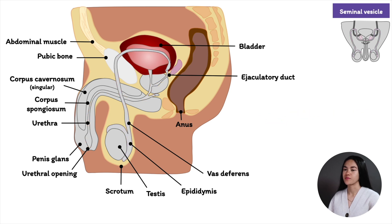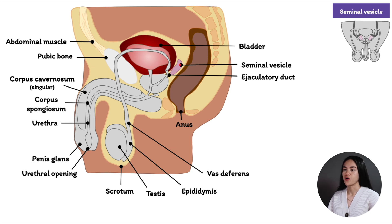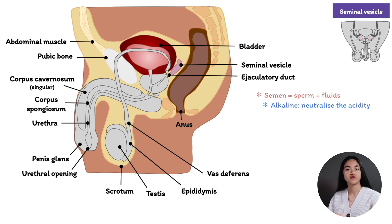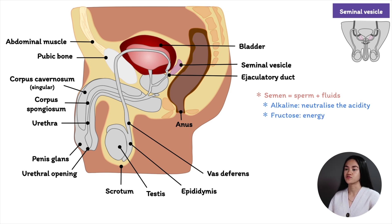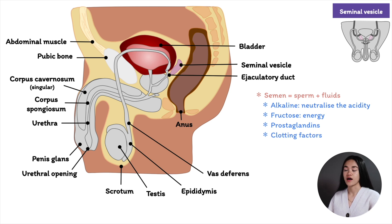The seminal vesicles are a pair of glands that secrete fluids as part of semen. Semen is made up of sperm and fluids. These fluids are alkaline to neutralize the acidity of the male urethra and the vagina. They contain fructose to provide energy for sperm, prostaglandins to suppress the female immune response to foreign semen, and clotting factors to help retain semen in the female reproductive tract.